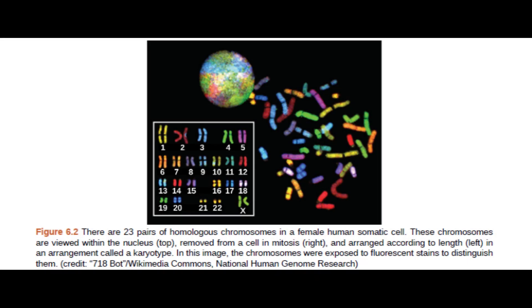Figure 6.2: There are 23 pairs of homologous chromosomes in a female human somatic cell. These chromosomes are viewed within the nucleus on top, removed from a cell in mitosis to the right, and arranged according to length on the left, in an arrangement called a karyotype. In this image, the chromosomes are exposed to fluorescent stains to distinguish them.